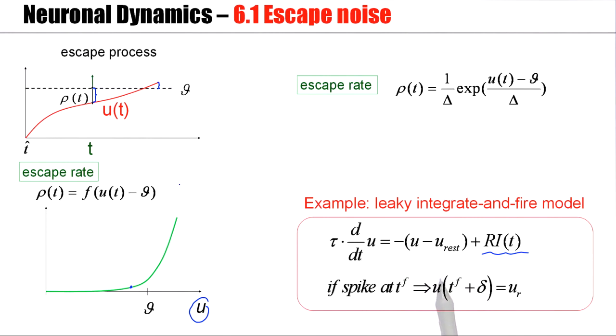One possibility is to say the escape rate is an exponential function of U minus θ, and this parameter Δ would control the steepness.